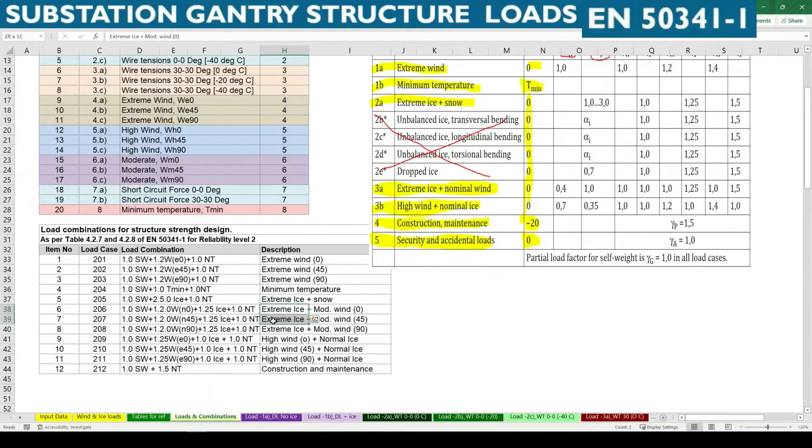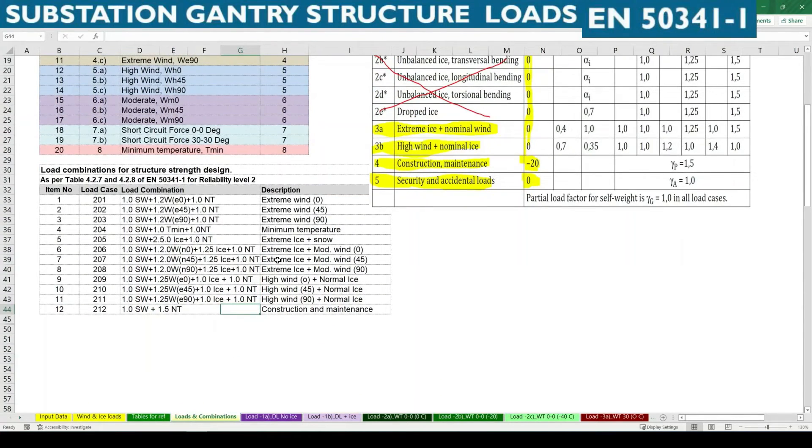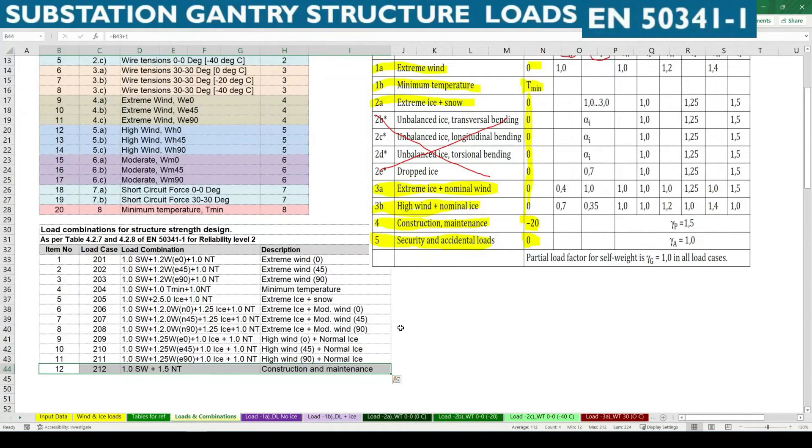Extreme ice plus moderate wind, high wind plus normal or moderate ice with various directions, and finally the construction and maintenance. The short circuit force we are not adding here, so that is not to be considered at this level.